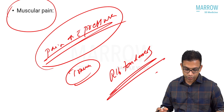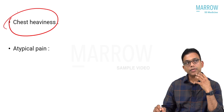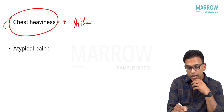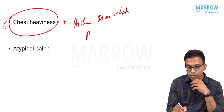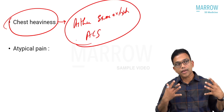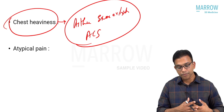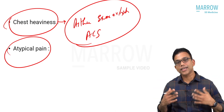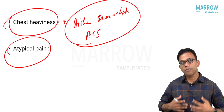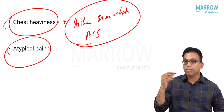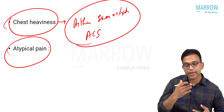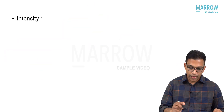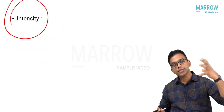A close differential of pleuritic pain is musculoskeletal pain, where pain increases with direct pressure on the area. Chest heaviness is another way patients may describe their pain — for example, in asthma exacerbation perceived as chest tightness, or in acute coronary syndrome perceived as a weight on the left chest. There is also atypical or vague non-cardiac, non-pleuritic pain, which may be part of fibromyalgia or other rheumatological conditions.